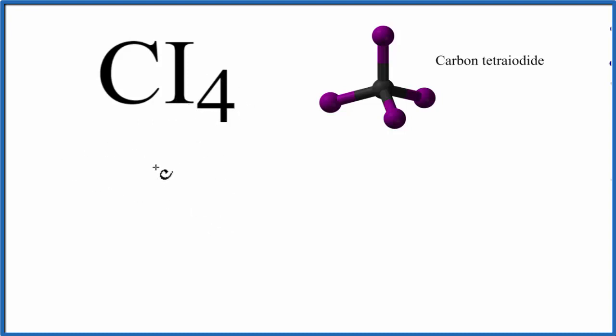Let's count the valence electrons up first. Carbon, that's in group 14, has 4 valence electrons. And iodine's in group 17, sometimes called 7A. It has 7 valence electrons.